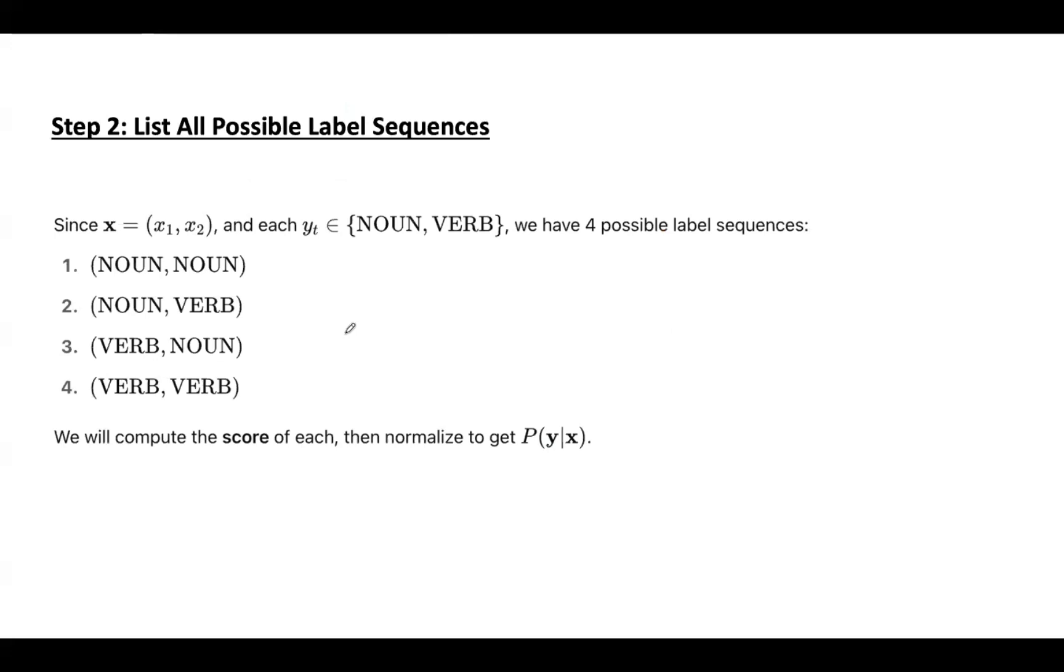List all possible label sequences. The input sequences x1, x2 and the output is noun, verb. We don't know which tag should be assigned to which word, so we are taking four different combinations: noun noun, noun verb, verb noun, and verb verb. There are total 2 to the power 2, equal to 4 possible combinations for this input.